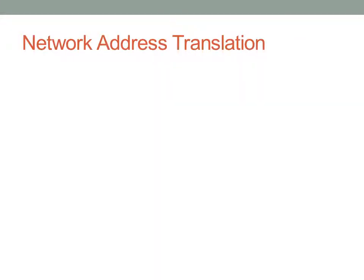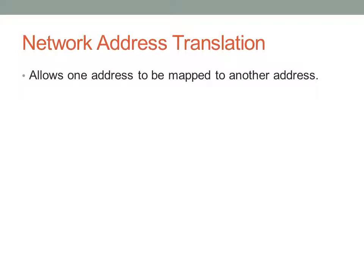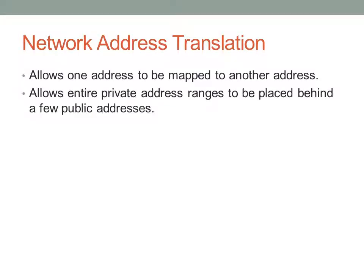Network address translation provides us with a workaround. It allows one address to be mapped to another address, and it allows entire private address ranges to be placed behind a few public addresses. We don't have to have too many globally routable IPv4 addresses — all we need are a few, or possibly even one, and we can have many devices rely on that single IPv4 address to get to the internet. This is probably what's happening in your house right now.